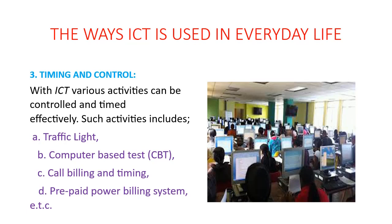Timing and control can also be seen in call billing and timing. When we make use of our phone, you are charged according to the time you spend making that call. For every second spent on a call, a particular amount is deducted. So the time a person with 100 naira credit can spend making a call is less than the time someone with 150 naira will spend, since they have more money and will last longer.